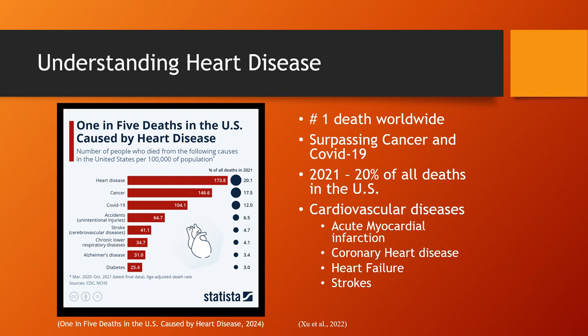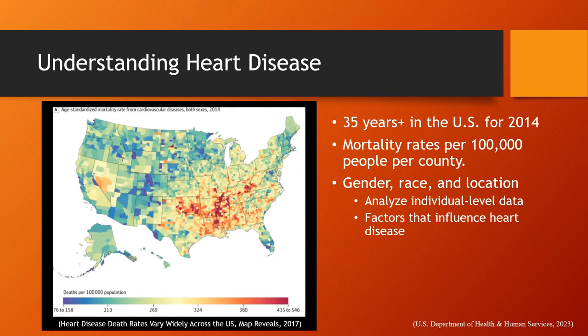What exactly falls under the umbrella of heart disease? It encompasses major cardiovascular diseases such as acute myocardial infarction, coronary heart disease, heart failure, and stroke. Let's shift our focus to the specific data we've gathered. This data zooms in on heart disease mortality rates among individuals age 35 and above in the United States for the year 2014, providing mortality rates per 100,000 people for each county, and includes factors such as gender, race, and geographical location.